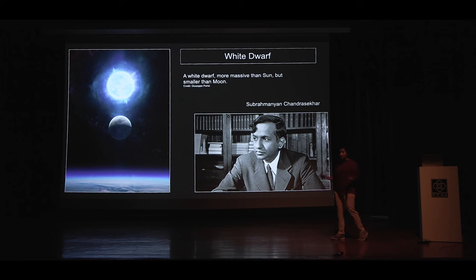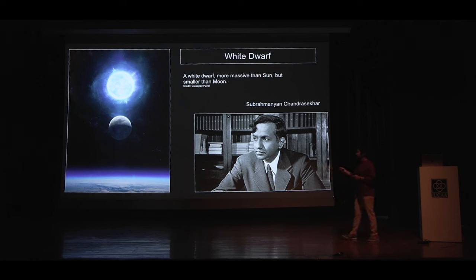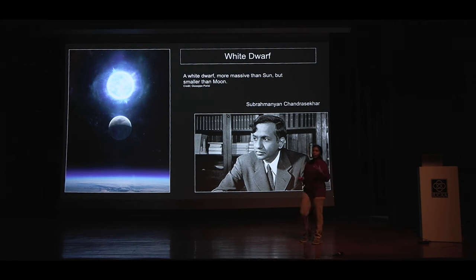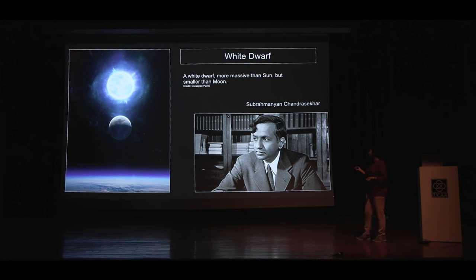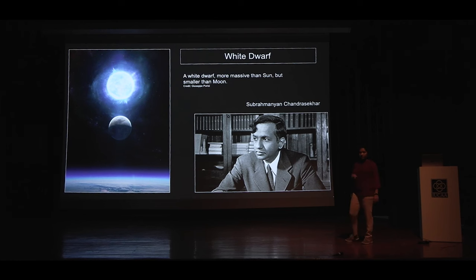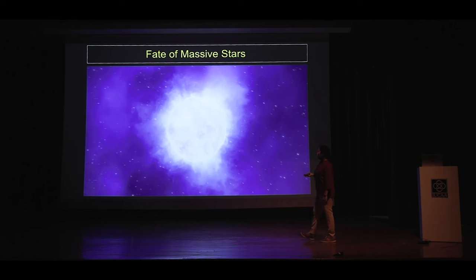A white dwarf is very massive and very dense. This real white dwarf is more massive than our sun, but its size is comparable to our moon. A teaspoon of white dwarf has a weight of 5,000 kg — you can imagine how dense it is. The properties of white dwarfs were first calculated by Chandrasekhar. He told us that the highest mass a white dwarf can have is about 1.4 times our sun. So anything smaller than this will become a white dwarf. But anything bigger — what happens to those?